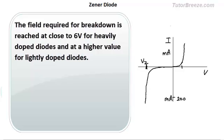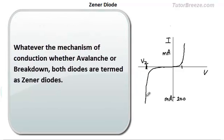Now whatever the mechanism of conduction whether it is avalanche or it is breakdown in both cases it is termed as a Zener diode.